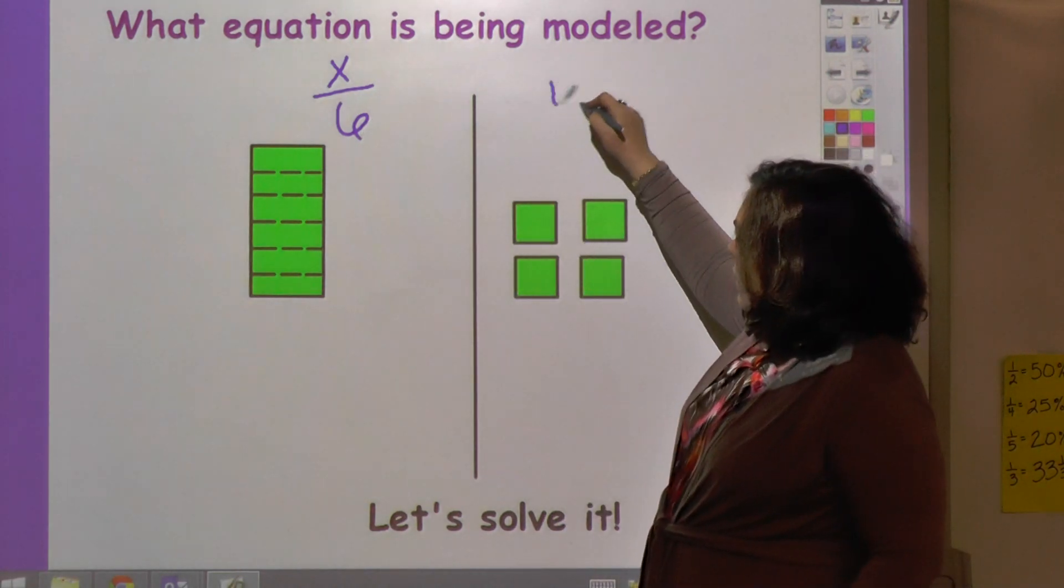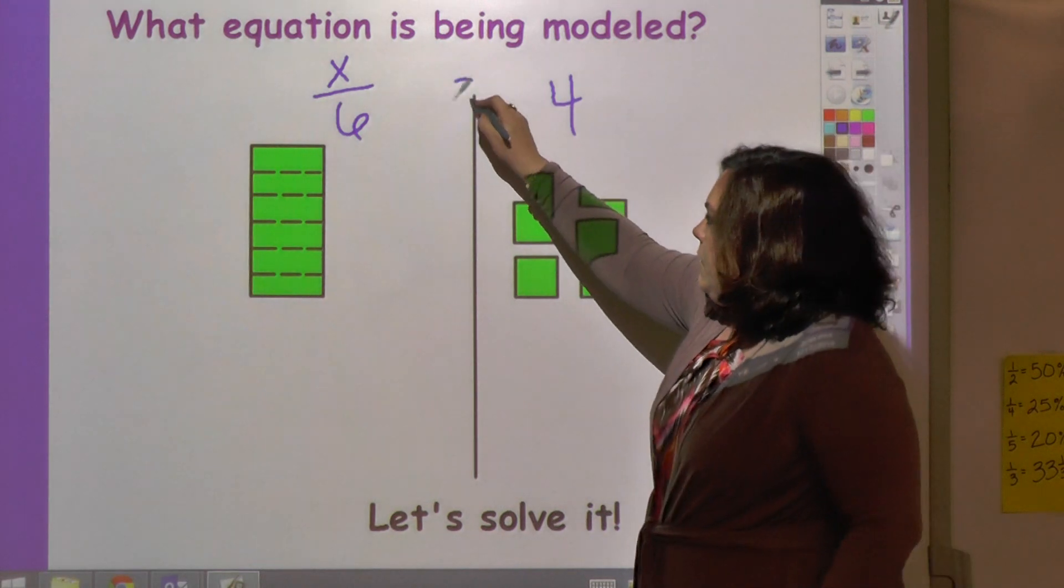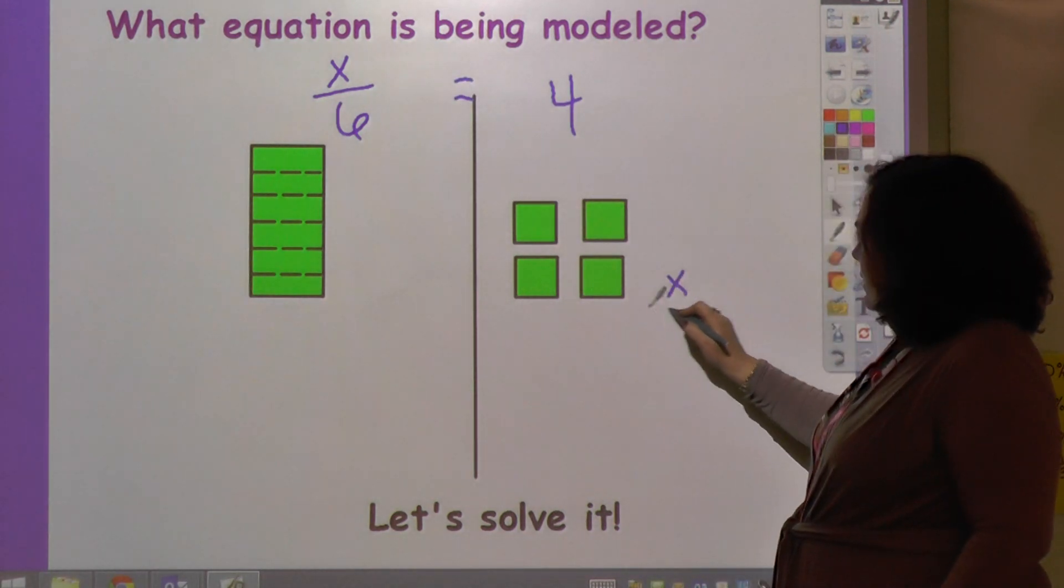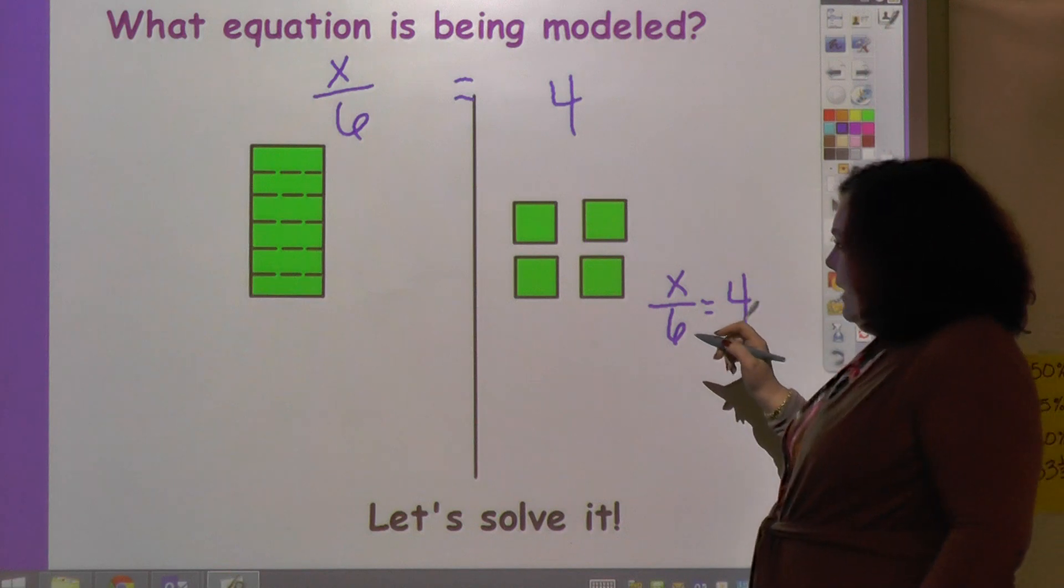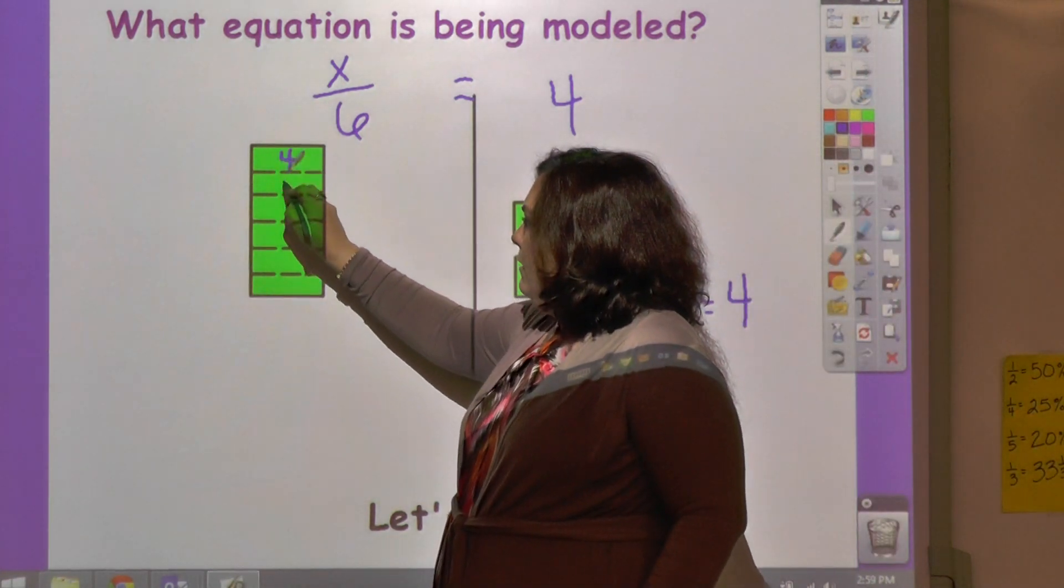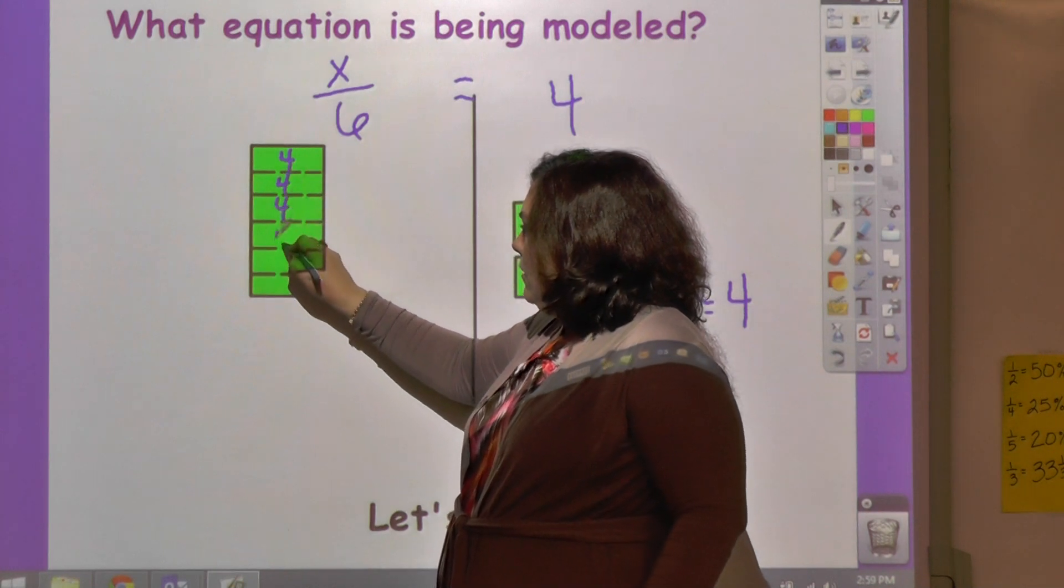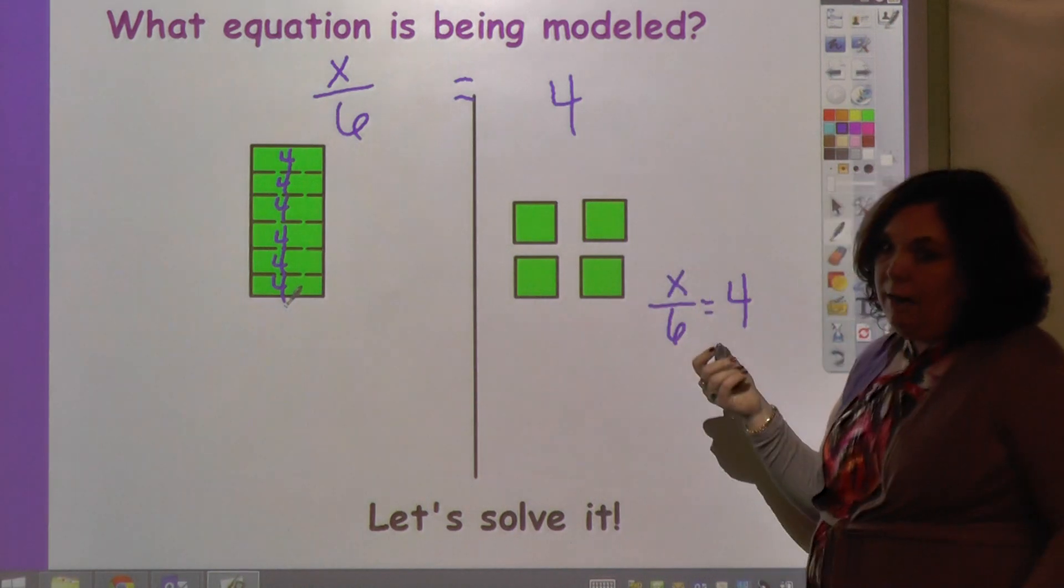And this is 4 over here, positive. 1, 2, 3, 4. And that's equals. So my equation is x divided by 6 equals 4. And so this is saying 4 of these go into each one of these pieces. So I'm going to have 4 all the way down. And so I add that up and I get 24.